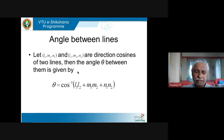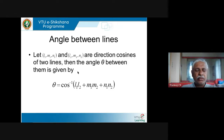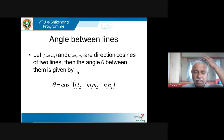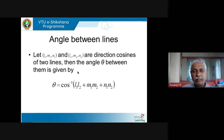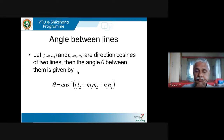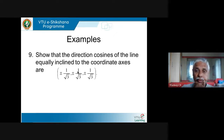Here is one very important result. If l1, m1, n1 and l2, m2, n2 are direction cosines of two lines and θ is the angle between them, then cos θ = l1·l2 + m1·m2 + n1·n2, so θ = cos⁻¹(l1·l2 + m1·m2 + n1·n2). Let's try some problems that will make this clearer.